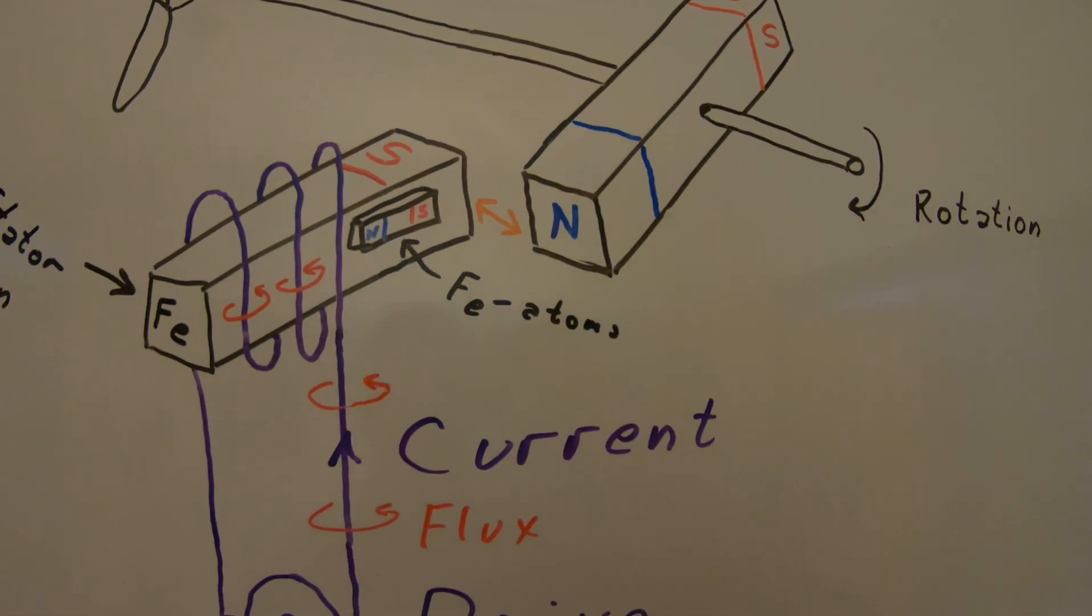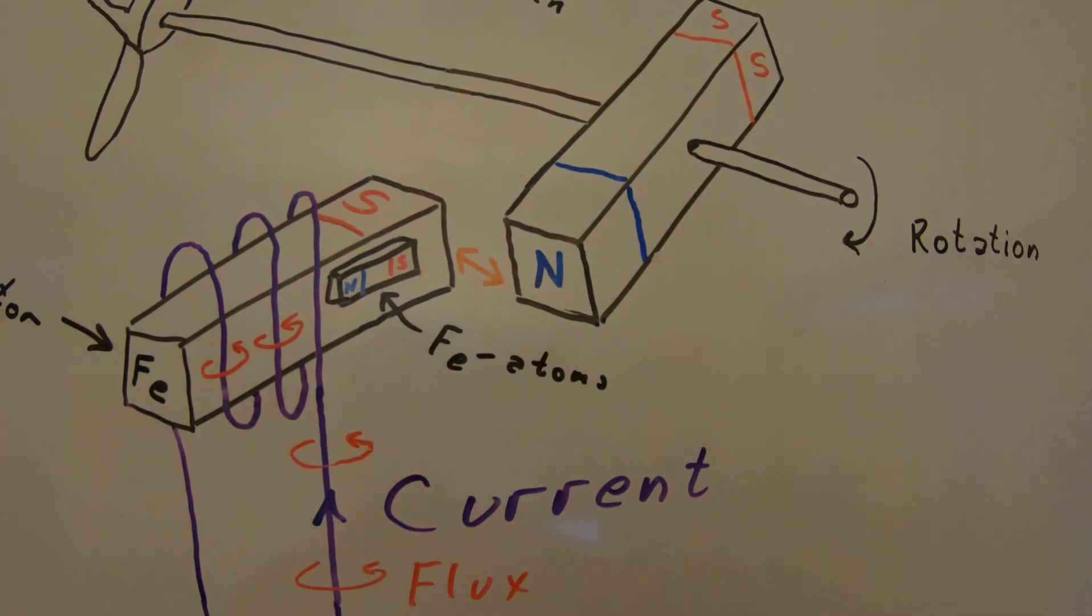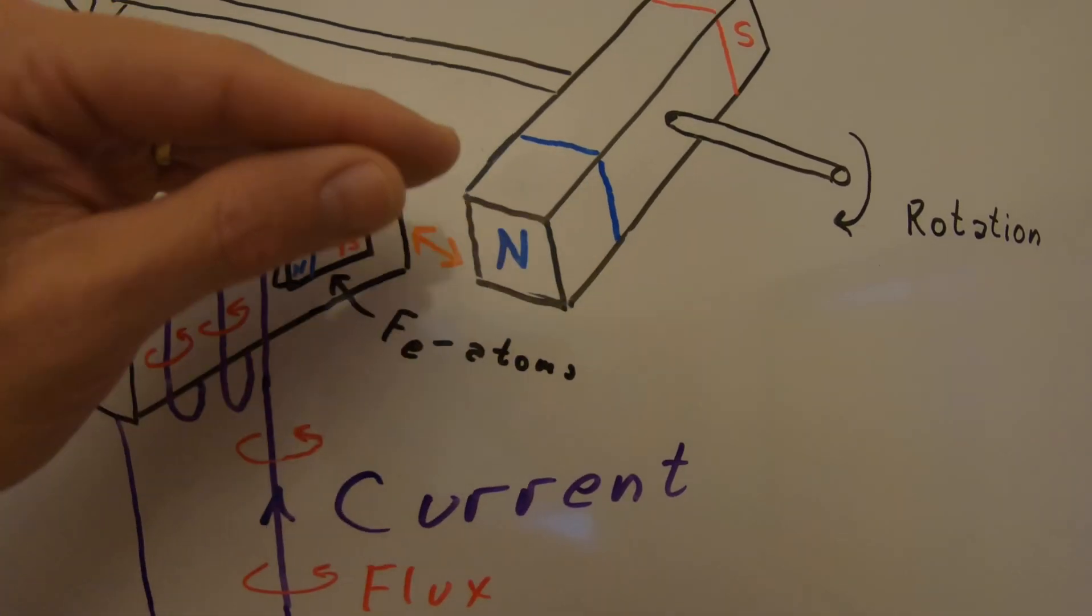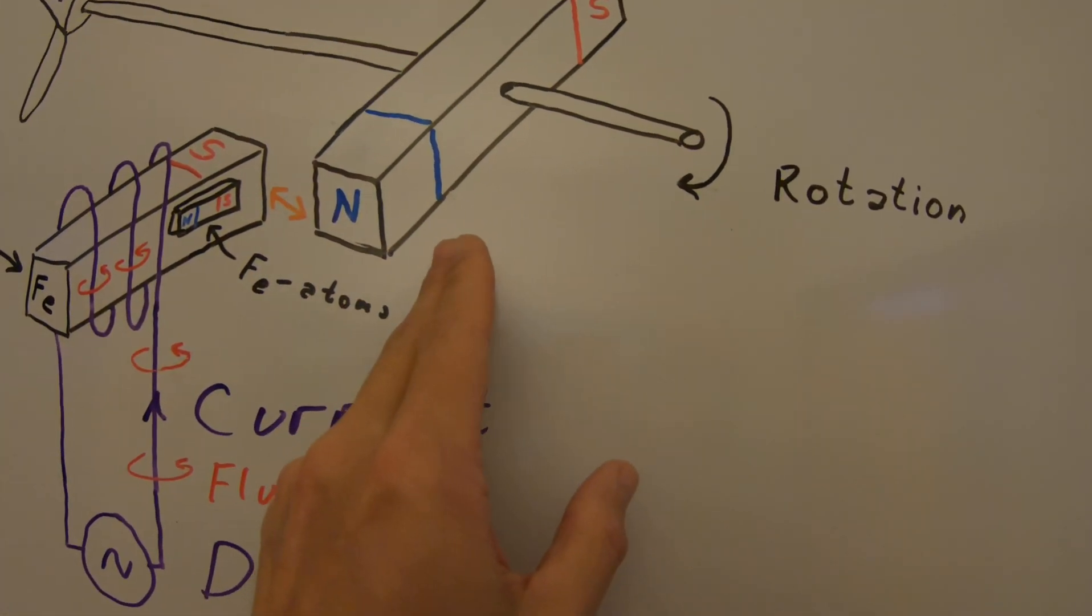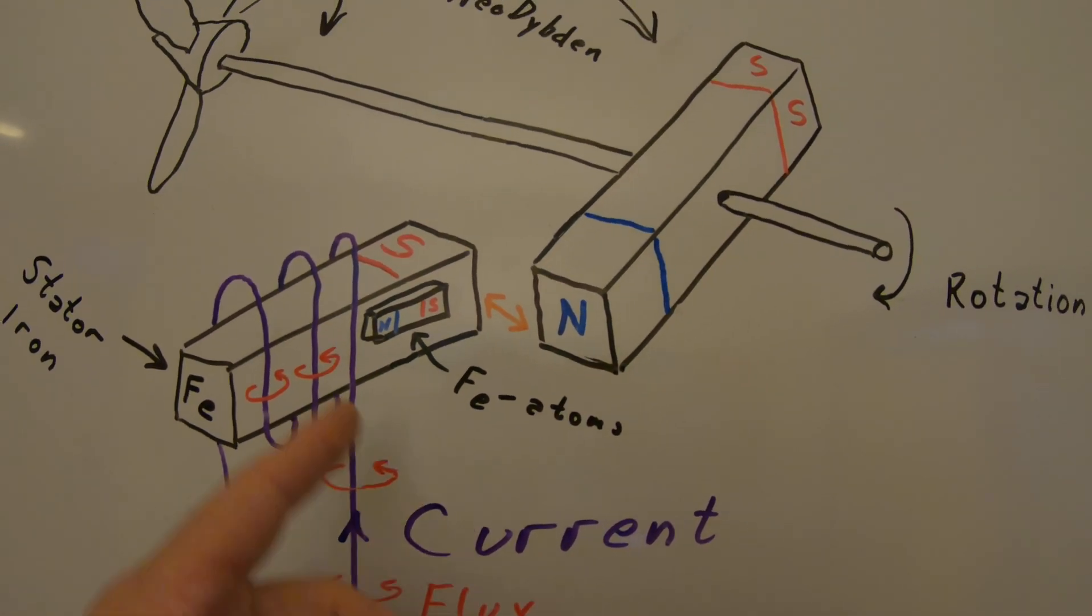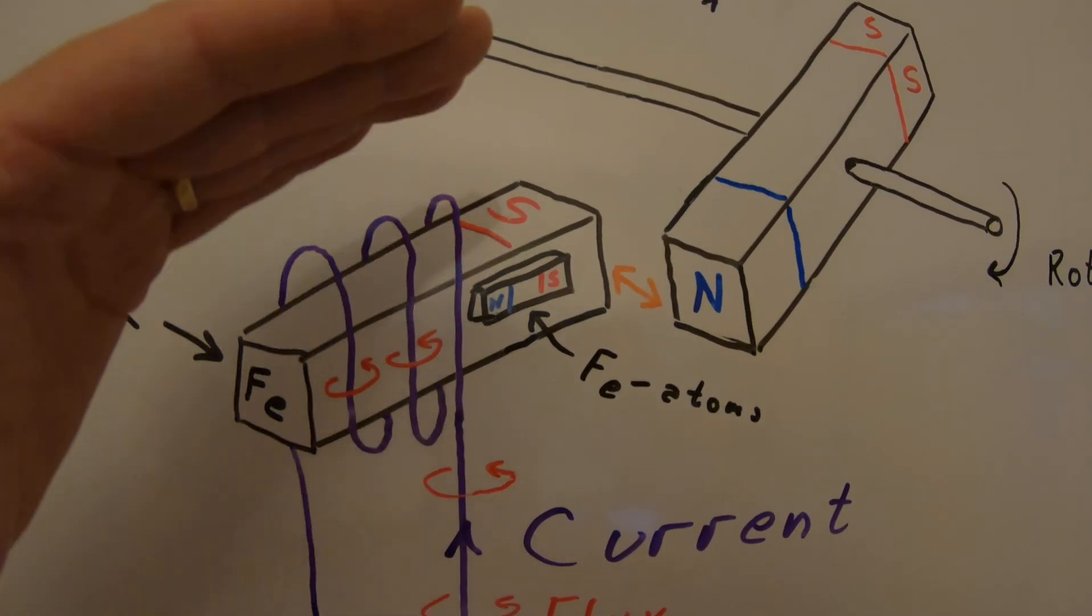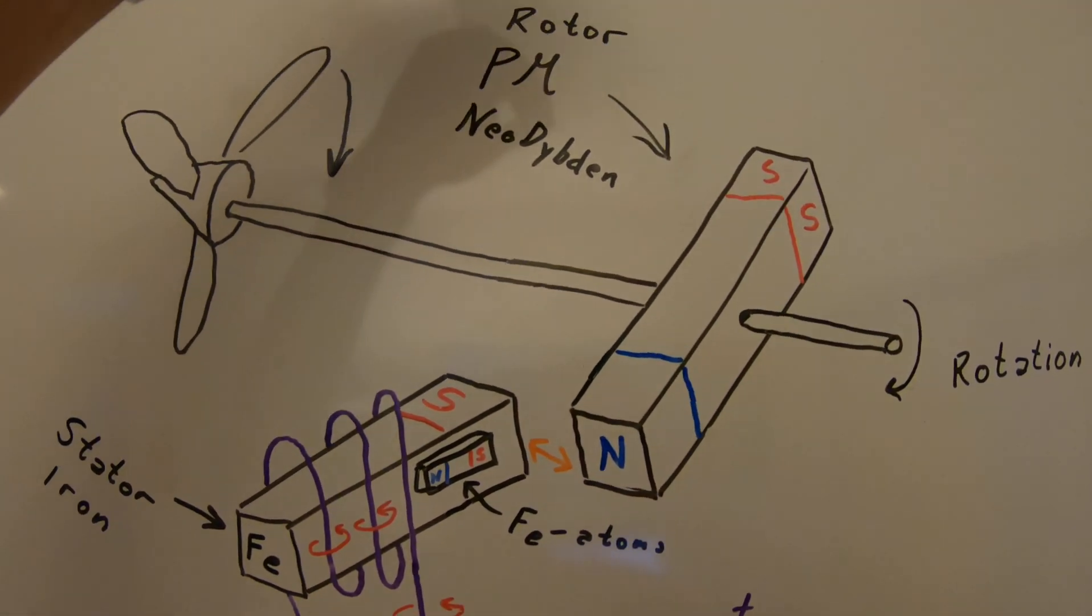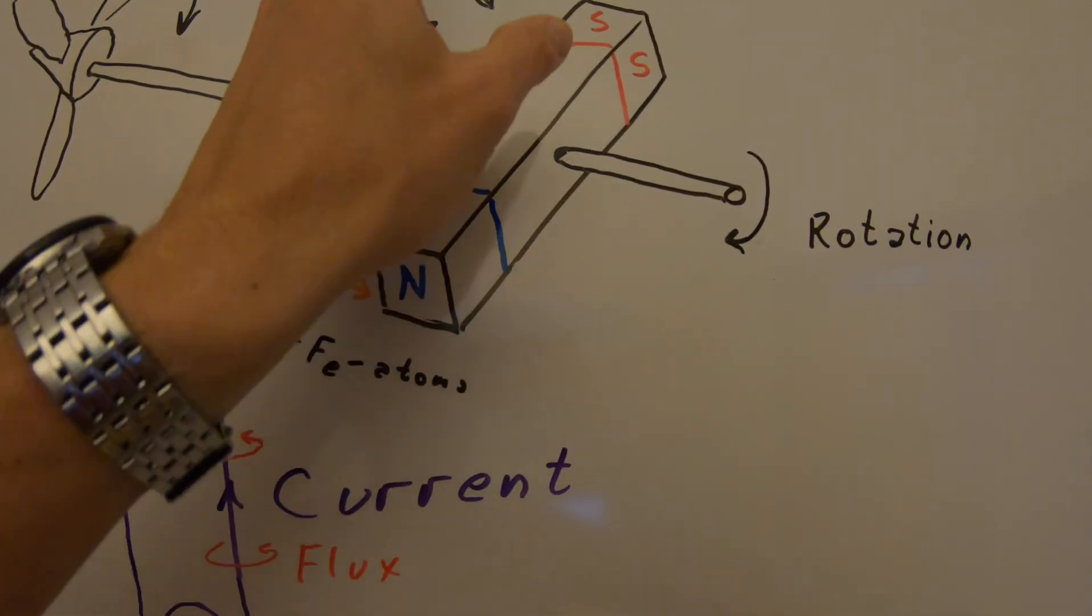We know that different polarity on the magnetics will attract each other. So these two ones they will attract and we now get a small rotation. So this one will move up to here. To get the full 360 degree rotation of course we then put many stator poles and they shift in pulling the rotor around.